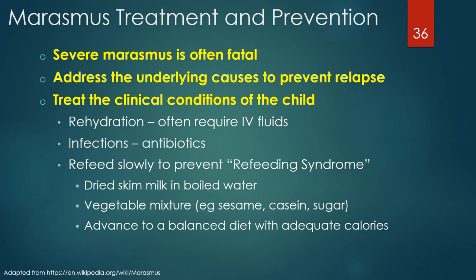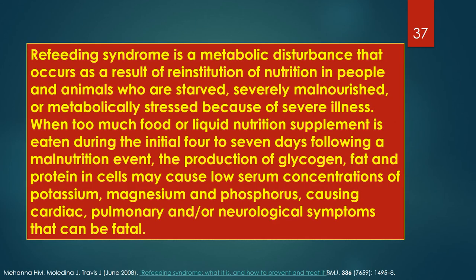Treating the clinical conditions of the child may include rehydration, often requiring intravenous fluid. Secondary infections are common in these children, requiring the use of antibiotics. Children with marasmus must be refed slowly to prevent refeeding syndrome — a metabolic disturbance that occurs as a result of reinstitution of nutrition in people who are starved, severely malnourished, or metabolically stressed because of severe illness.